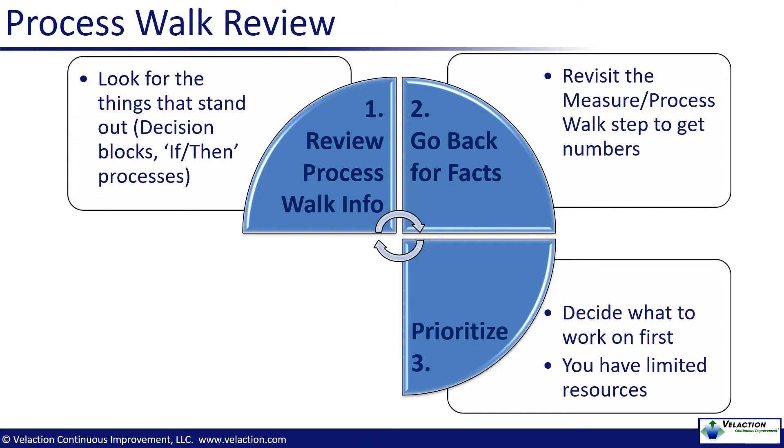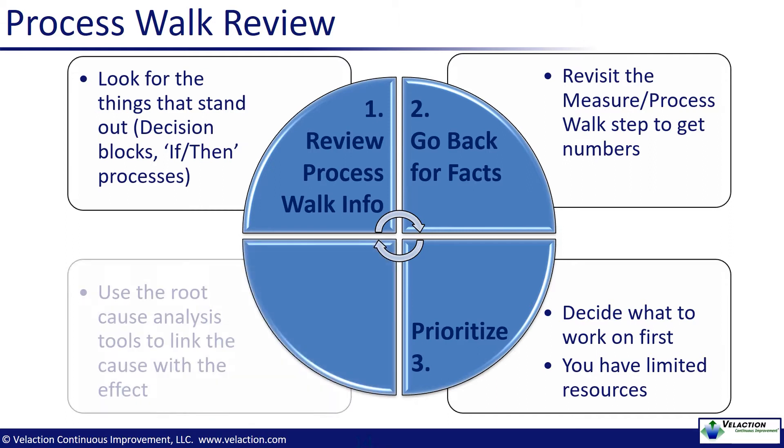Once you see the data and have an understanding of the magnitude of the problems your process is experiencing, it is time to prioritize. You'll do this by considering how big the problems are as well as by estimating the difficulty to fix them. Once you know what you want to go after, head out and research the root causes. You'll have some idea because of the data, so in some cases, you'll just be looking for confirmation. The key here is to find the underlying issue as part of your data analysis so you're working on the problem rather than on a symptom.